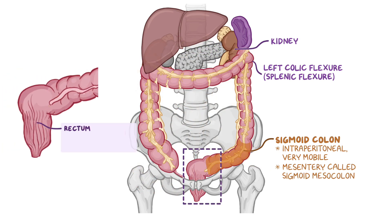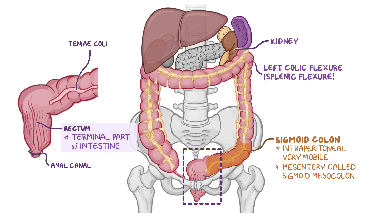The rectum is the terminal part of the large intestine, is fixed retroperitoneally, and is continuous inferiorly as the anal canal. Also note that the teniae coli mentioned previously end at the rectum, where they form a continuous muscle layer, and this transition point indicates the rectosigmoid junction.